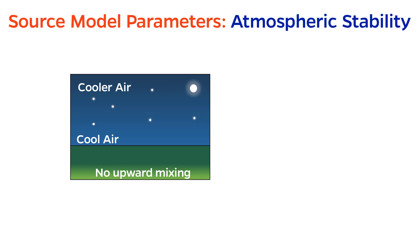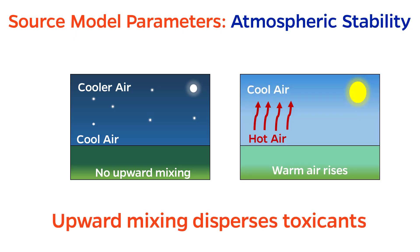Related to the idea that mixing is generally a good thing, atmospheric stability is another parameter. This means a degree of vertical mixing as a result of temperature gradients. On a calm night, the air close to the ground is cooler than the air higher in the atmosphere. As a result, there is no motion of air upwards, and therefore very little turbulence to break up a cloud of hazardous chemical. In contrast, during the day, the sun warms the air close to the ground. This warm air wants to rise, which increases mixing and helps disperse the chemical.